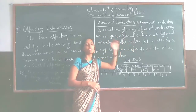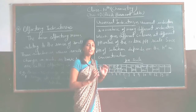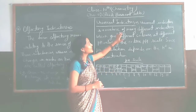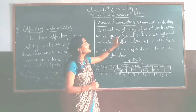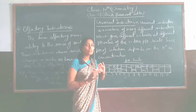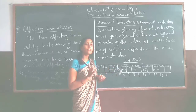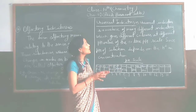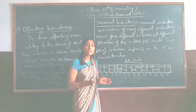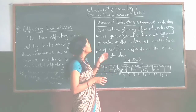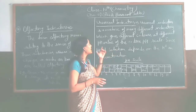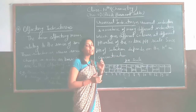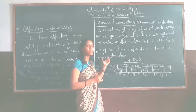Now the next indicator is the universal indicator. Universal indicator — the name is very big. Universal indicator is a mixture of many different indicators, which gives different colors at different pH values across the entire pH scale.